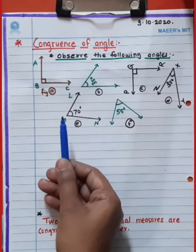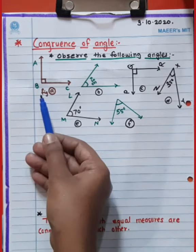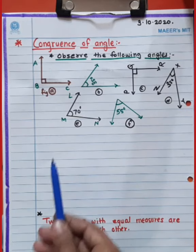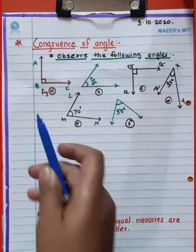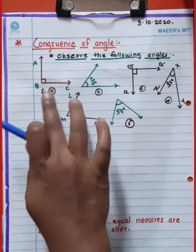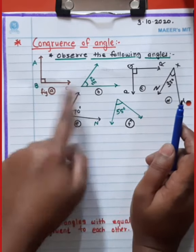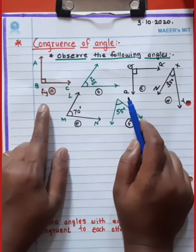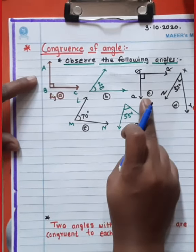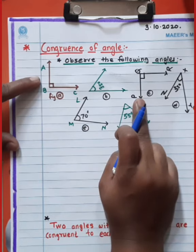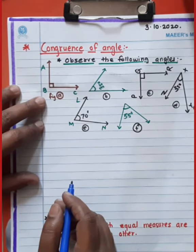Look at figure A. Angle ABC is 90 degrees. These two angles — angle ABC and angle PQR — are congruent to each other because they have equal measurements, that is 90 degrees. So these two angles are congruent. Why congruent? Because they have equal measurements of angle — both are equal to 90 degrees.